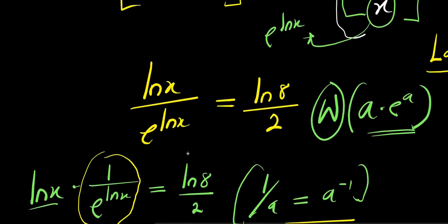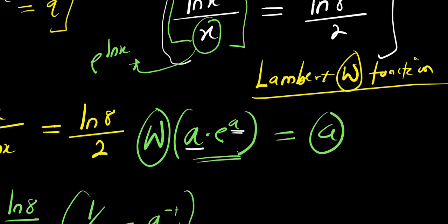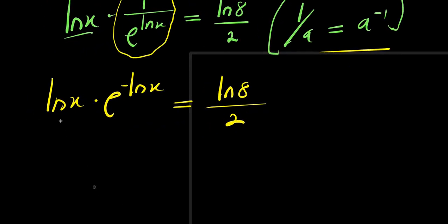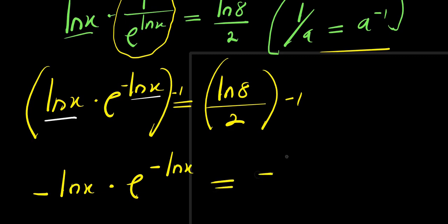For the Lambert W function, the a in a times e to the power of a must be the same on both sides. So we multiply both sides by negative 1, giving us: negative natural log of x times e to the power of negative natural log of x equals negative natural log of 8 divided by 2.